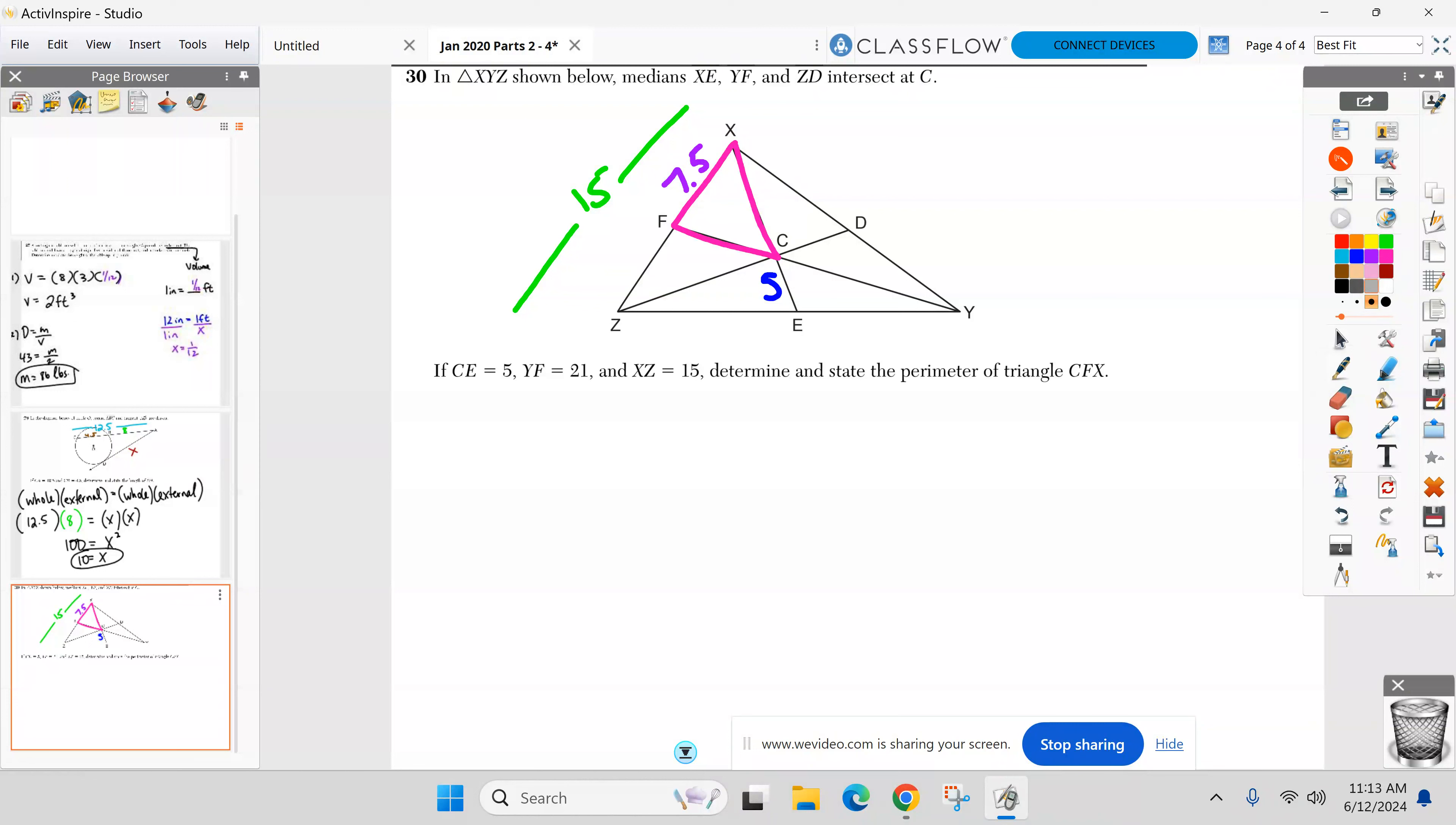So that's the first step is knowing what, remembering what a median is. Second step or second part is, hey, all these medians intersect at point C. We got a name for point C. We got a name. Anybody remember that point where all three medians intersect? Doyle. Yes. There you go. Centroid.